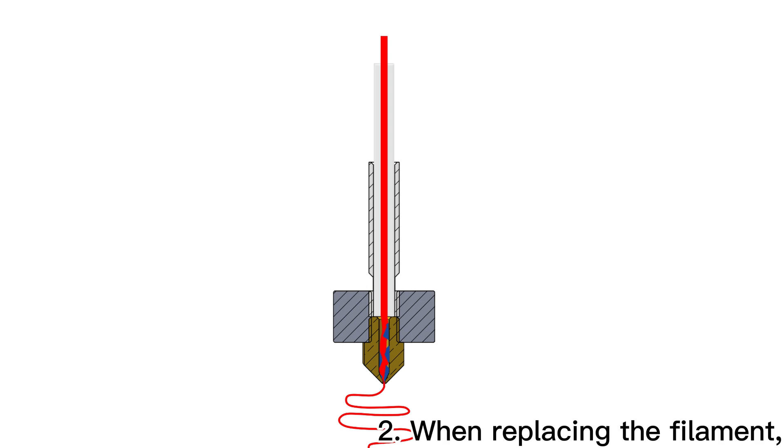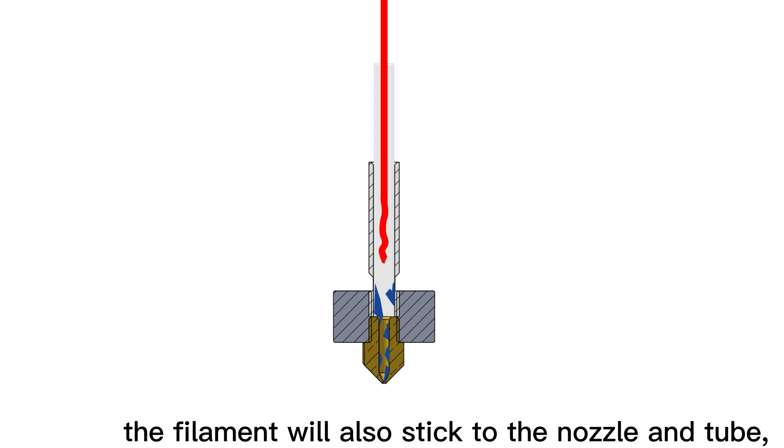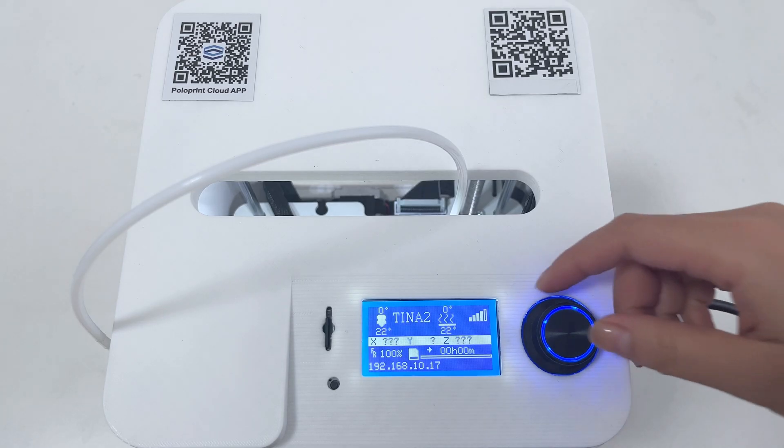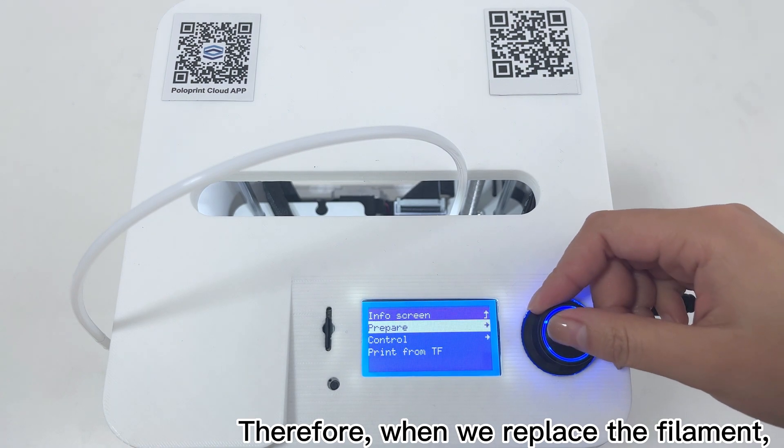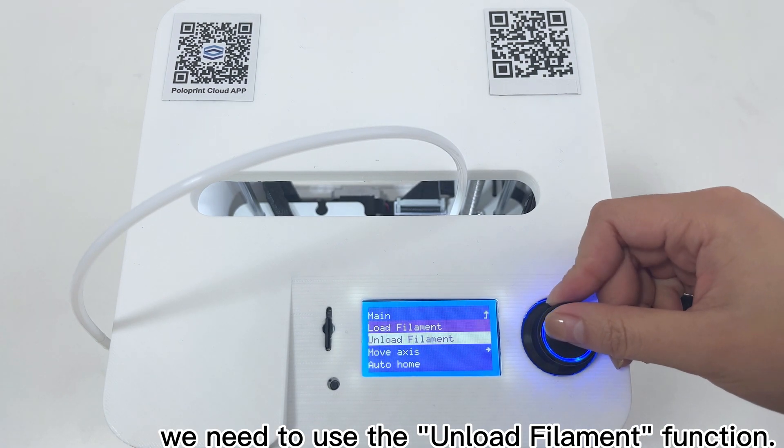2. When replacing the filament, if you pull it out directly, the filament will stick to the nozzle and tube, causing blockage. Therefore, when we replace the filament, we need to use the unload filament function.